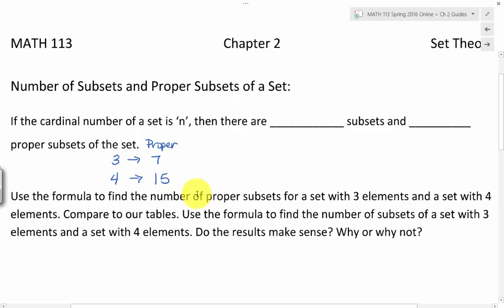So then we're looking at just subsets, and we had eight and 16. So whatever we do, we know that they're one apart because you have that one complete set that is also considered a subset, but not a proper subset of whatever your original was.